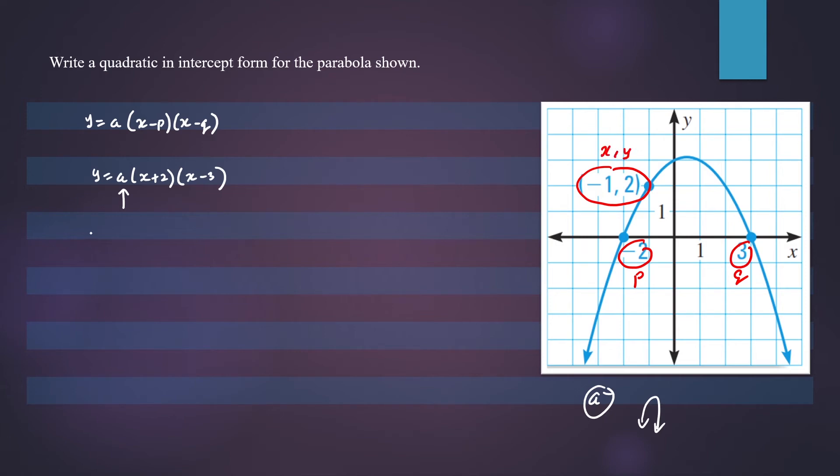And we can substitute those numbers for x and y in our equation. That means we can write y, which is 2, equals a times x, which is negative 1, plus 2, and x is negative 1 minus 3.